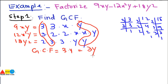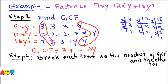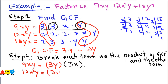Step two is to break each term as a product of the GCF and the remaining factor. For 9xy: GCF is 3y, and what remains is 3x, since 3y times 3x gives 9xy. For 12x squared y: GCF is 3y, and what remains is 4x squared, since 3 · 2 · 2 = 12 and x · x = x squared.